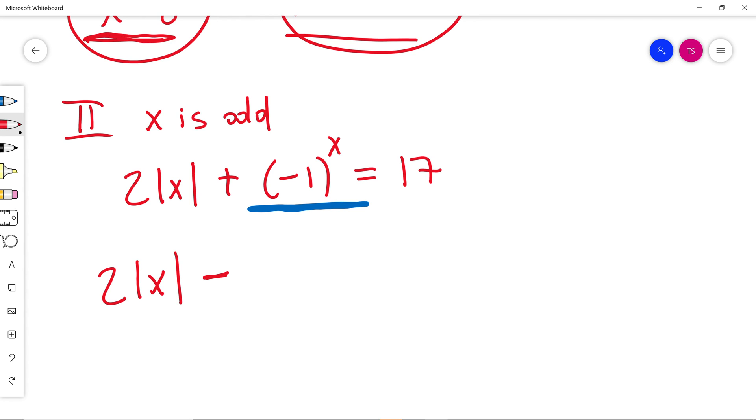For odd, all odd x numbers, this part will be just always negative 1. This is equal to 17.